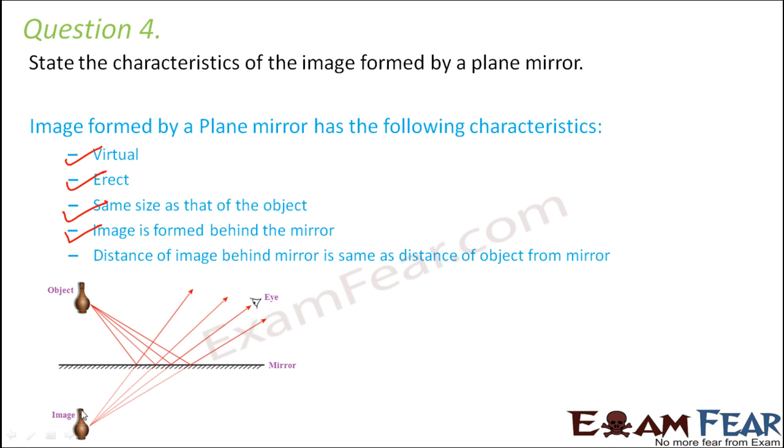Image is formed behind the mirror. The distance of the image behind the mirror is same as the distance of the object from the mirror. So if the object is at a distance O and the image is formed at a distance I, then O will always be equal to I. These are some characteristics of image formed by a plane mirror.